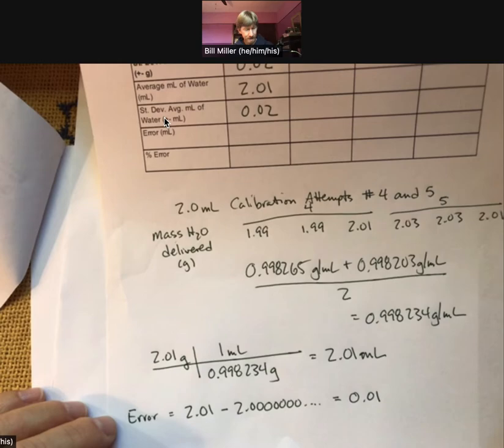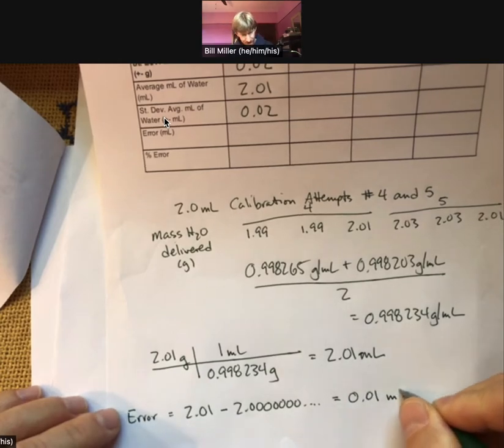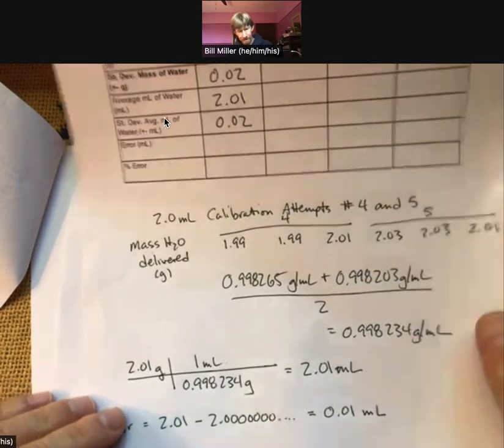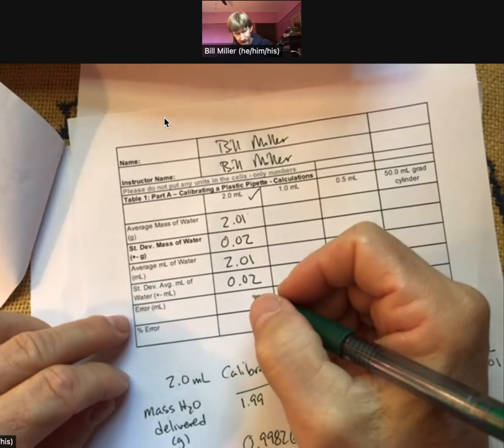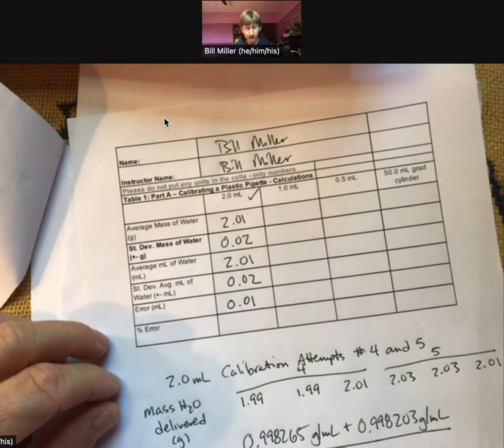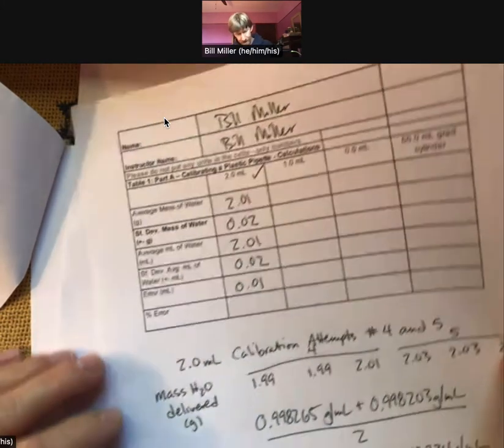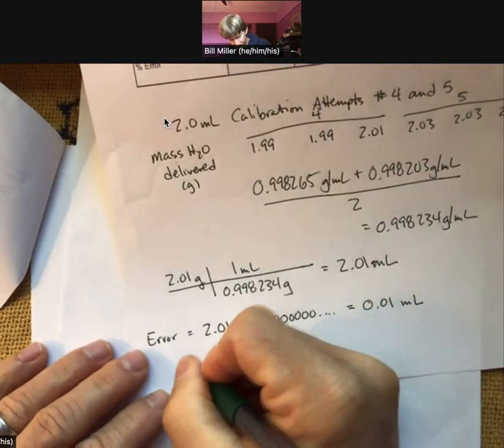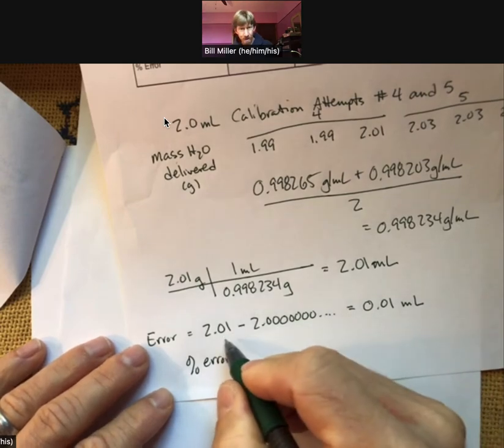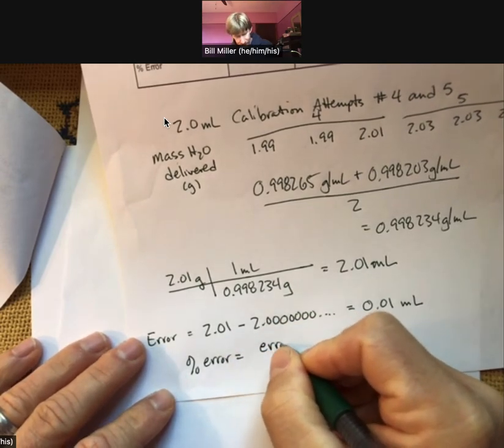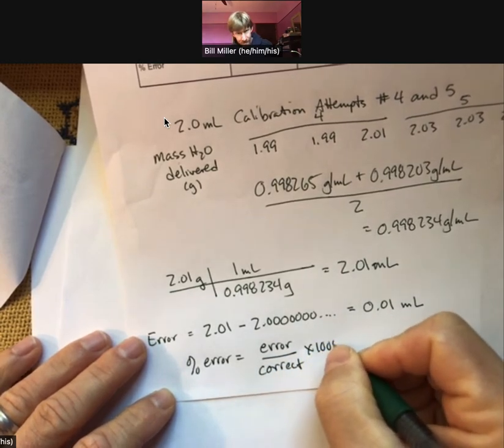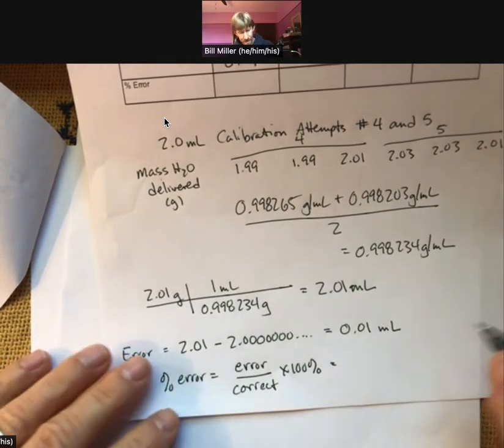Our error is 0.01. That's going to be milliliters. We're referring to the difference here between our experimental minus our correct. That's in milliliters as well. The percent error is going to be, let's see if I can zoom it in here. Percent error, this number is always in the numerator. So that's just our error divided by our correct number or accepted times 100%.